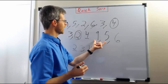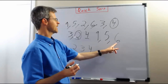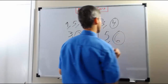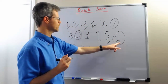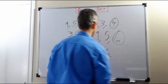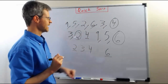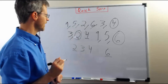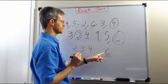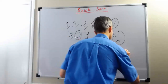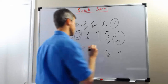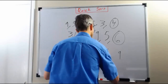Now over here we have the list 9, 5, and 6. Again we pick the rightmost item as the pivot per convention, so 6 is our pivot. We write 6 down and underline it to show it's been chosen as a pivot. 9 is greater than 6 so we put 9 after the 6. 5 is less than 6 so we put 5 before the 6.